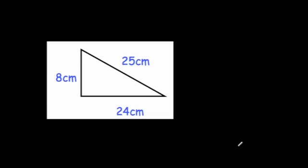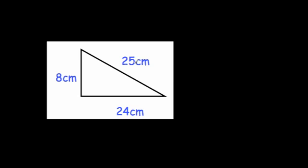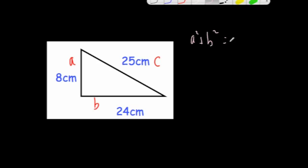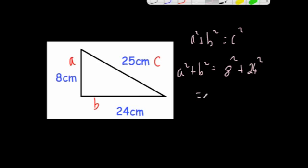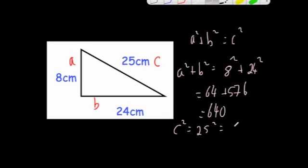One last example. This time we have one that does look like a right-angled triangle, but we just need to check it. We'll label the sides a, b, and c, where a and b are the two shorter sides and c is the largest. Stating Pythagoras' theorem: a squared plus b squared equals c squared. Working out a squared plus b squared: 8 squared plus 24 squared equals 64 plus 576, which gives 640. C squared equals 25 squared, which is 625.